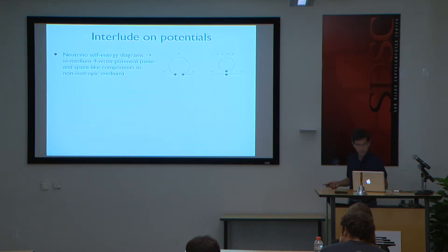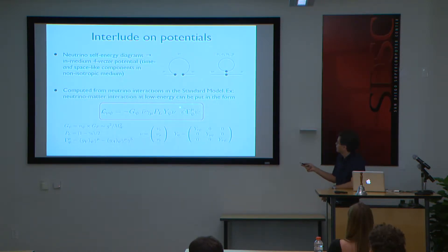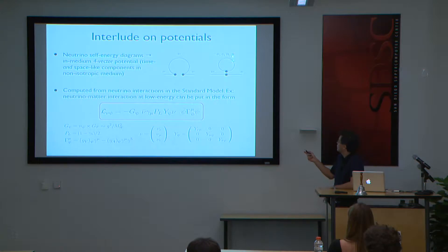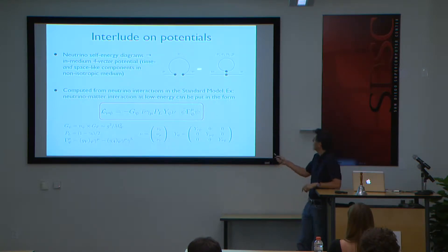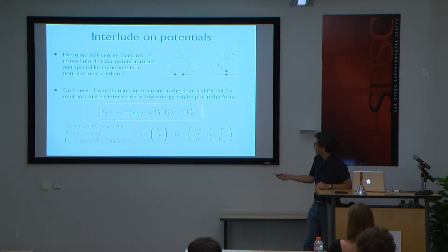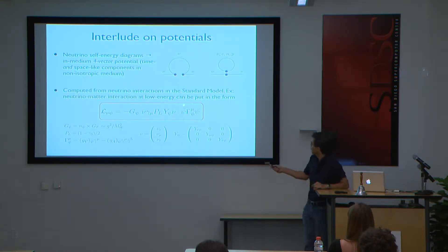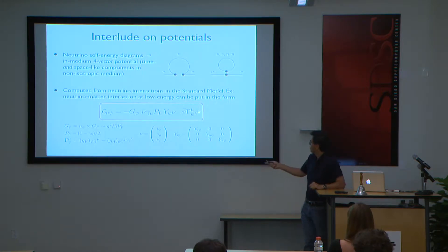It's very useful to write down the interaction of neutrinos with any matter field — electron, neutron, proton — in a specific form. Using something called the Fierz identity, you can always put it in the form of a neutrino left-handed current, nu-bar gamma-mu P-left, times a current involving the other field. This contains a vector contribution and an axial vector contribution from the matter field. The three neutrino flavors are put in a vector, and in principle each may have different flavor-dependent coupling. G-psi is proportional to the Fermi constant.